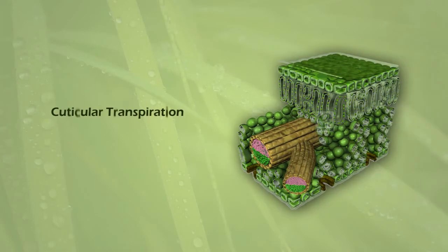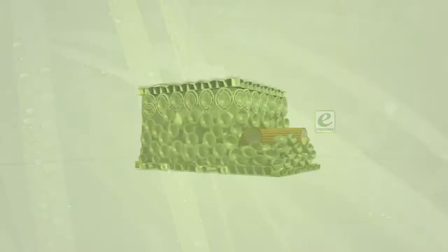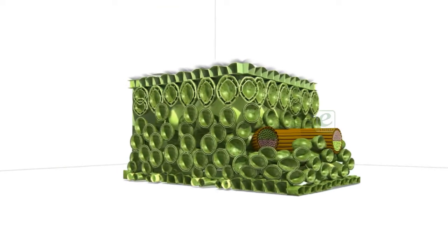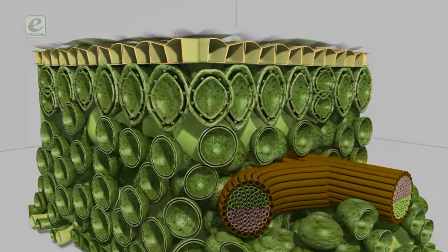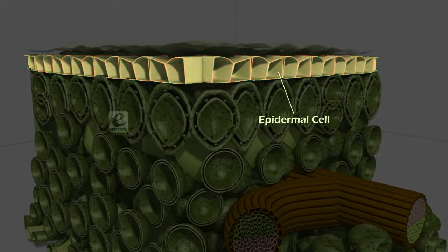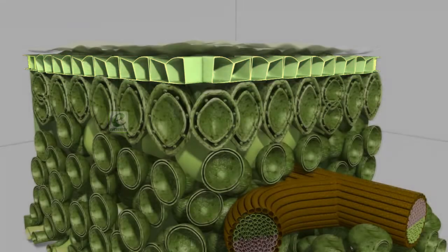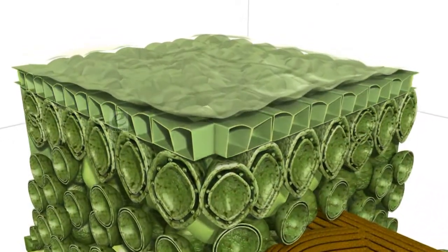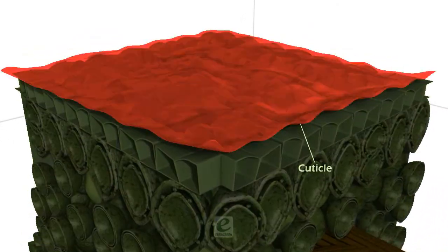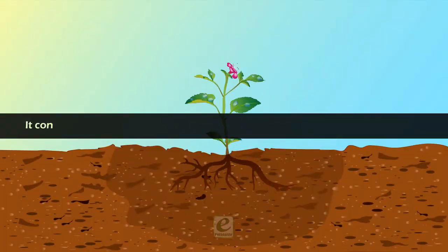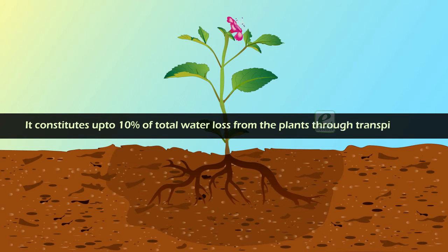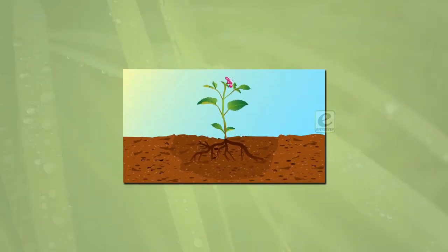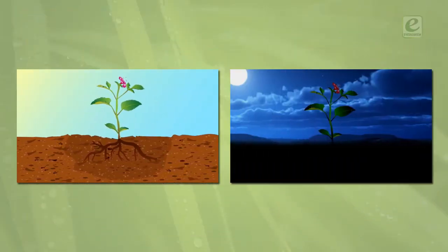The second type is cuticular transpiration. Some transpiration takes place by the direct evaporation of water from the outer walls of the epidermal cells. Water loss due to evaporation through the cuticle is called cuticular transpiration. It constitutes up to 10% of total water loss from plants and occurs continuously day and night.